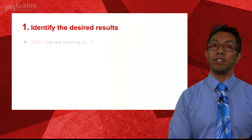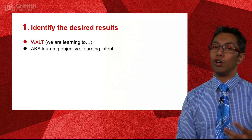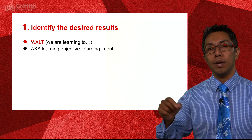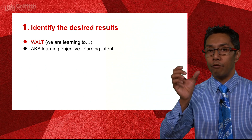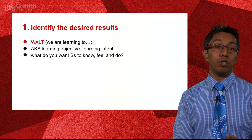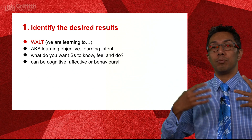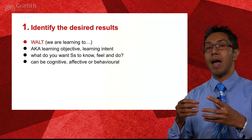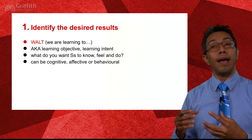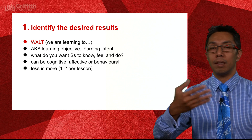Step one: identifying the desired result. Depending on the school, these are called learning objectives, learning intents, or WALTs. The stem 'We are learning to' is helpful for writing the rest of the sentence. Essentially, you're making a statement about what you want students to know, feel, or do — developing students' brains in the cognitive, affective, and behavioural domains. Cognitive is content, affective is attitudes and feelings, and behavioural is skills.